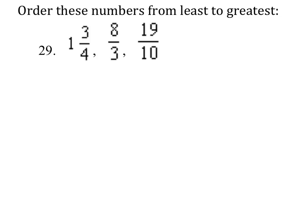We need to order these from least to greatest. We can do this using common denominators. 1 and 3 fourths, we want to change into an improper fraction. 1 times 4 plus the 3 would give us 7 fourths.